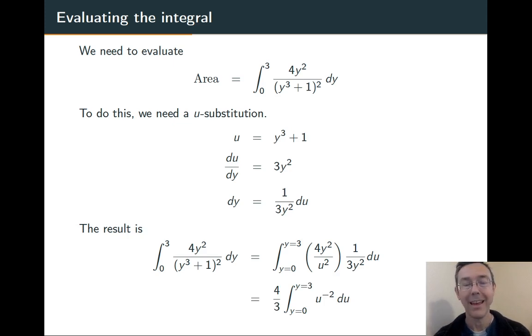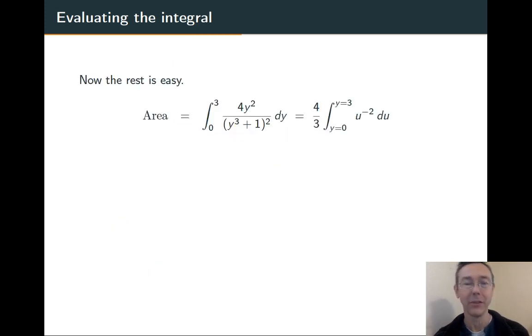Tiny bit of simplification and now we're ready to integrate. So let's do it. We raise up the power by one and divide by the new power to get negative four thirds u to the negative one. Before we plug in those limits of integration, we substitute back in the y³ plus one for our u, plug in, simplify a tiny bit, and we have our answer, nine-sevenths.